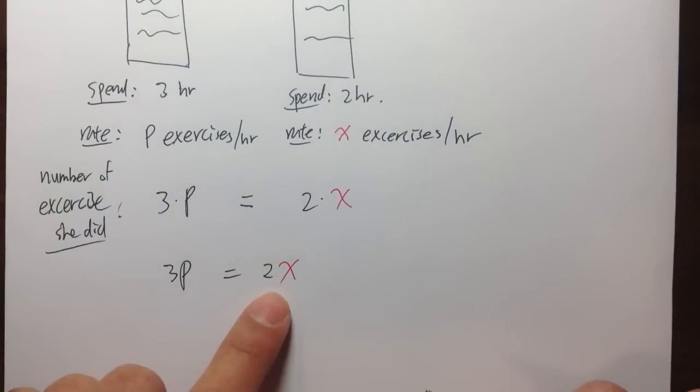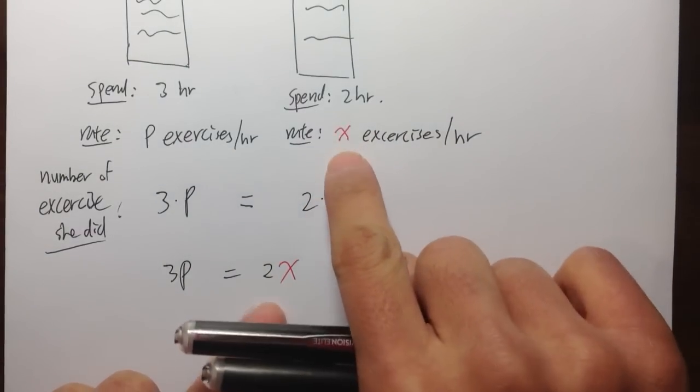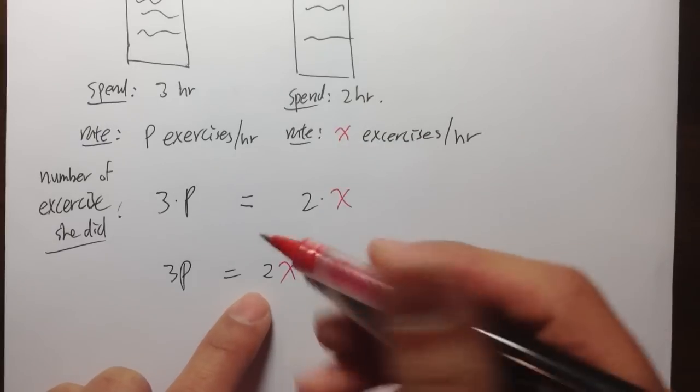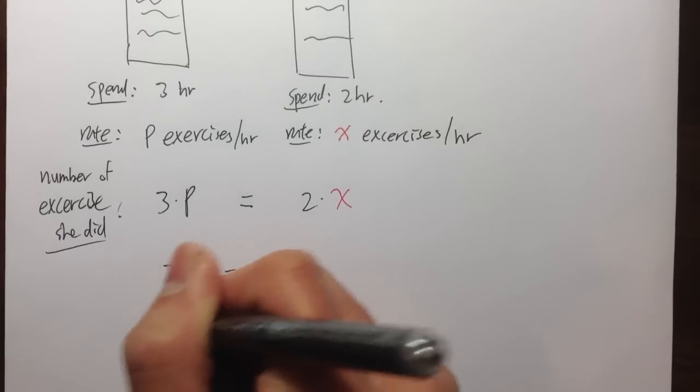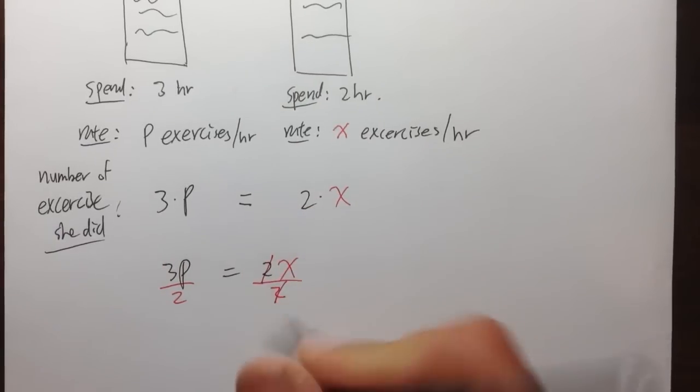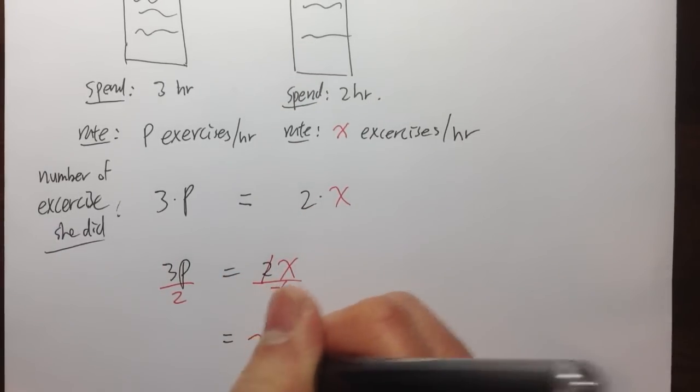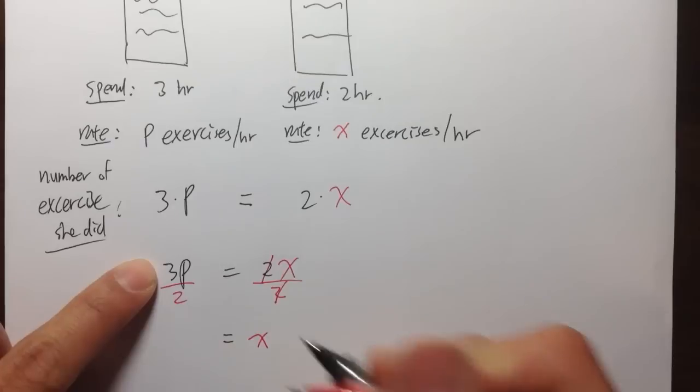And we are solving for X, because that's what we are trying to find out. So we have 2 times X, we just need to divide both sides by 2. So we can cancel the 2, and then we can get X is equal to 3P over 2.